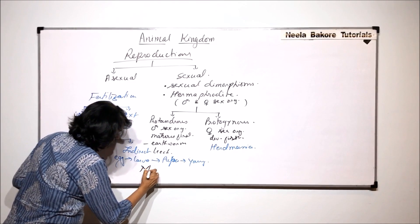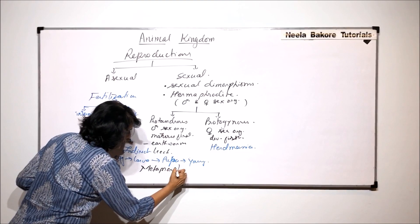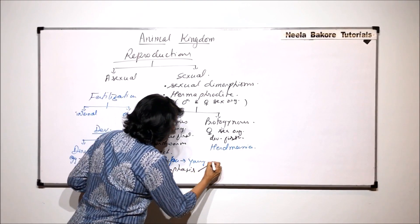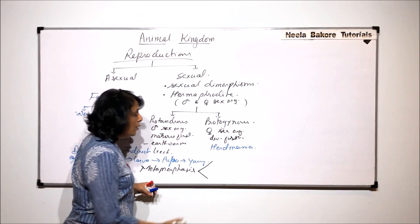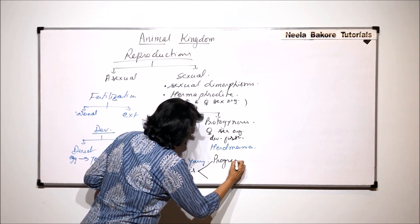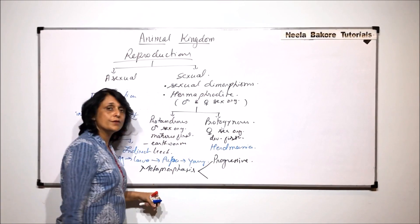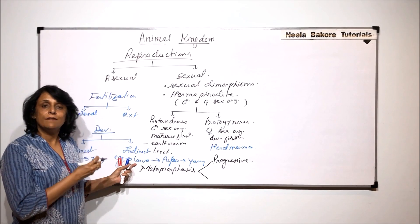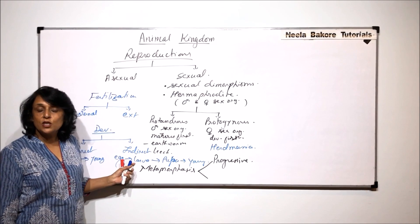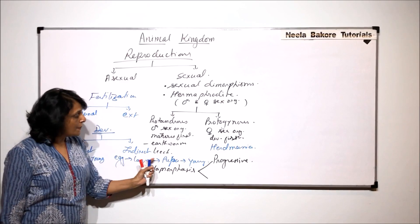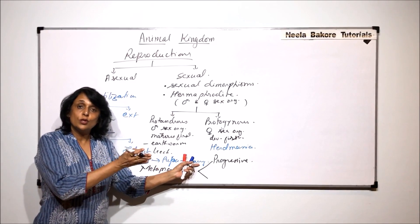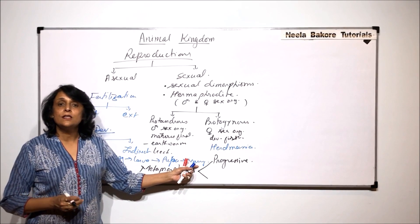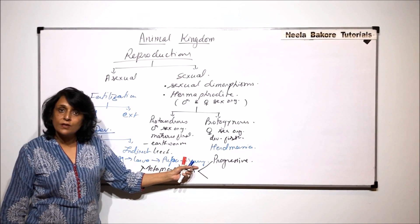This is called metamorphosis. Now this metamorphosis can also be of two types. Normal metamorphosis is called progressive metamorphosis where the larval or the pupal stage is less developed. There are less specialized structures which are formed. But as it grows towards the adult stage or young stage, then more and more advanced and specialized structures or organs are formed.